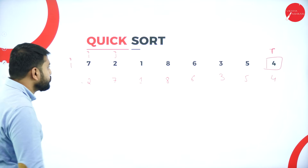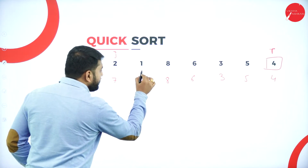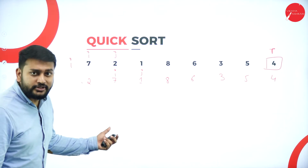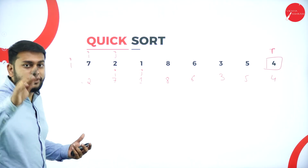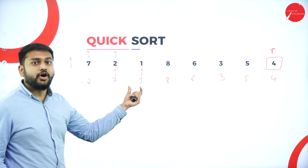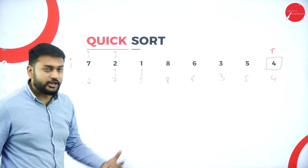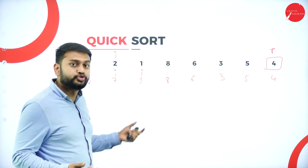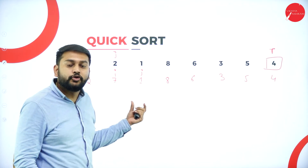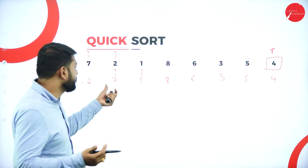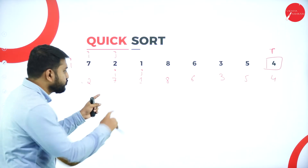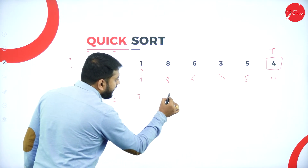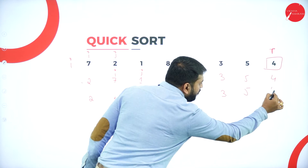Then J moves to the next position and I moves accordingly. I always compare J with the pivot element. J is now pointing to one. One is less than four — should I swap? Yes, I have to swap it with I. After swapping, the array becomes: 2, 1, 7, 8, 6, 3, 5, 4. Now I have I and J at their respective positions.